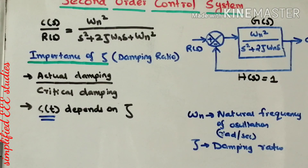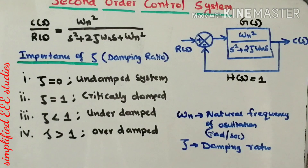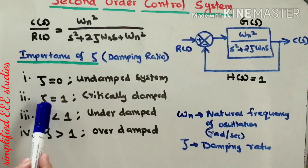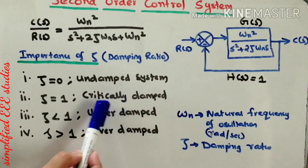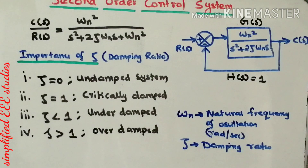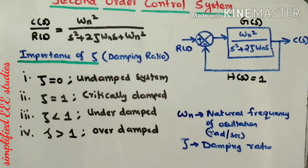Let us find the different values of zeta. If zeta equals 0, the system is undamped. If zeta equals 1, the system is critically damped. If zeta is less than 1, the system is underdamped. If zeta is greater than 1, the system is overdamped. This is how you classify the second-order control system based on the value of zeta.